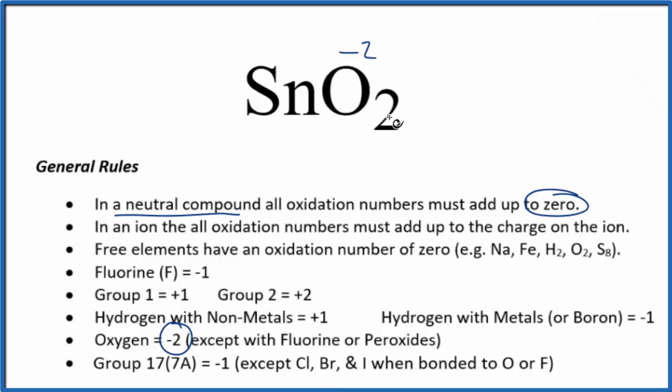As we look at this, 2 times minus 2, that's minus 4. So for this all to add up to zero, we have to have positive 4 as our oxidation number on the tin in SnO₂.